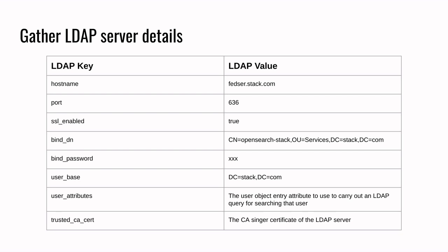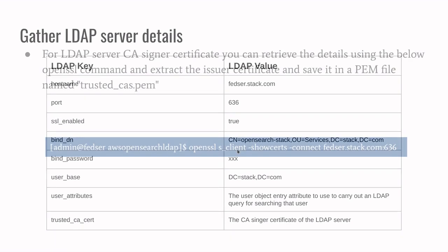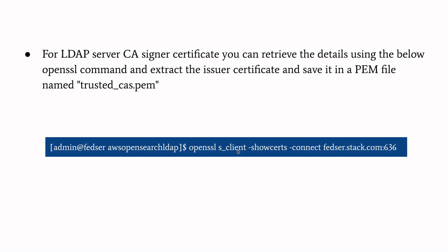The next one is the trusted CA certificate. The LDAP server is a secure server configured with a certificate provided by a CA authority. To get the CA certificate of an LDAP server, you can use the OpenSSL command which shows the certificate chain of an LDAP server. From that, you can capture the issuer certificate and copy it into a PEM file. I have named it trusted_CA.pem. You can carry out this activity on your local server to extract the LDAP server CA signer certificate.